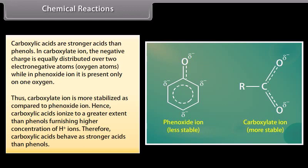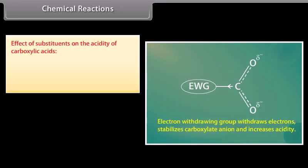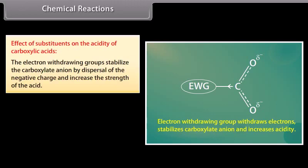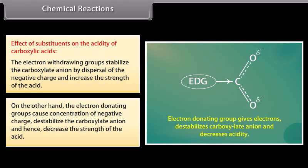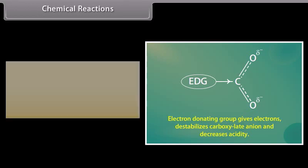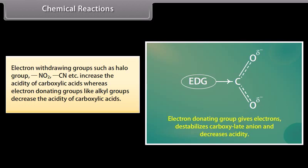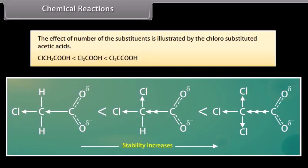Effect of substituents on the acidity of carboxylic acids: electron-withdrawing groups stabilize the carboxylate ion by dispersal of the negative charge and increase the strength of the acid. On the other hand, electron-donating groups cause concentration of negative charge, destabilize the carboxylate anion, and hence decrease the strength of the acid. Electron-withdrawing groups such as halo, NO2, CN, etc. increase the acidity of carboxylic acids, whereas electron-donating groups like alkyl groups decrease the acidity. The acid strength increases from chloroacetic acid to trichloroacetic acid.